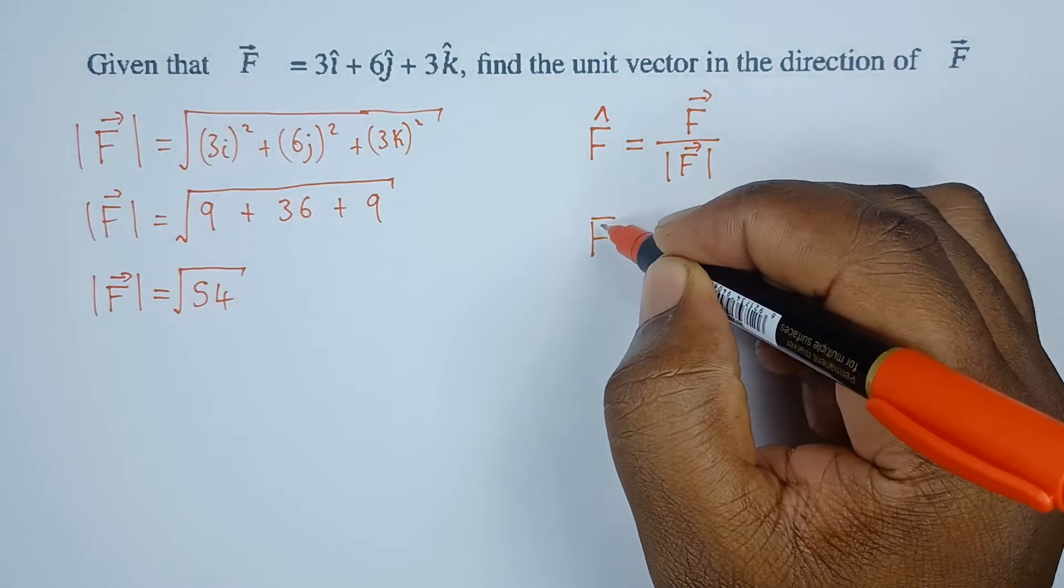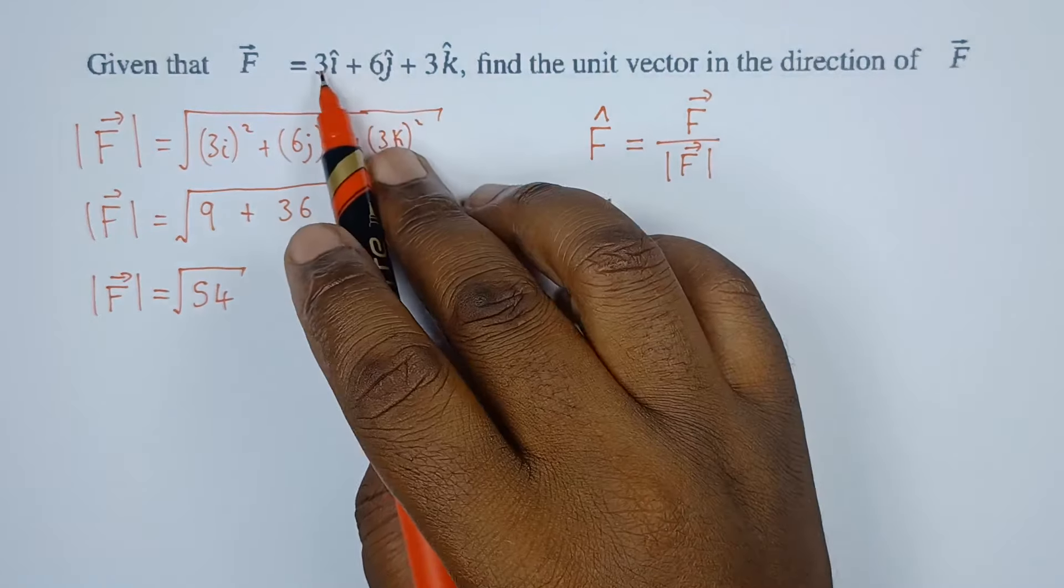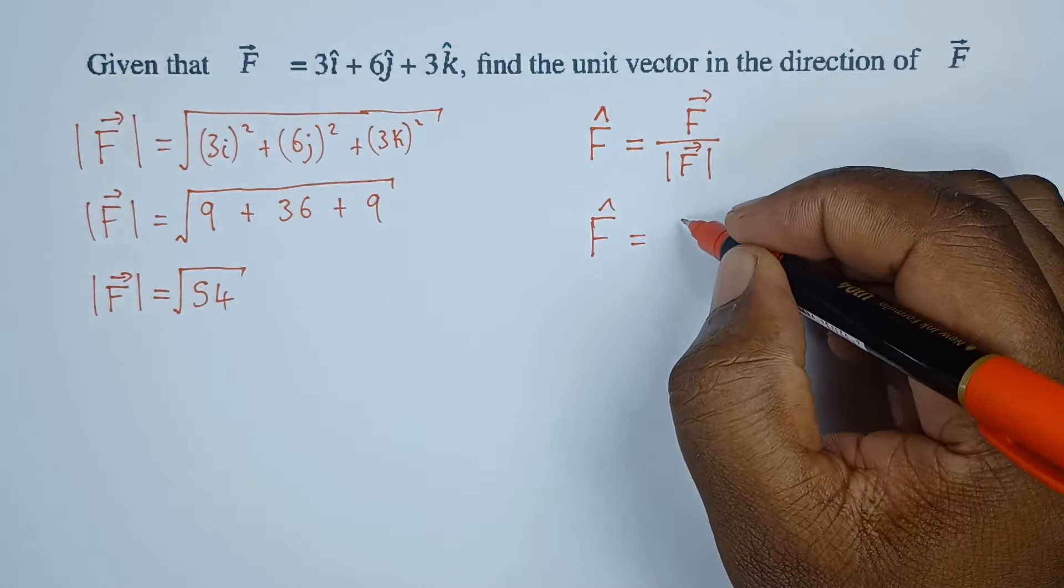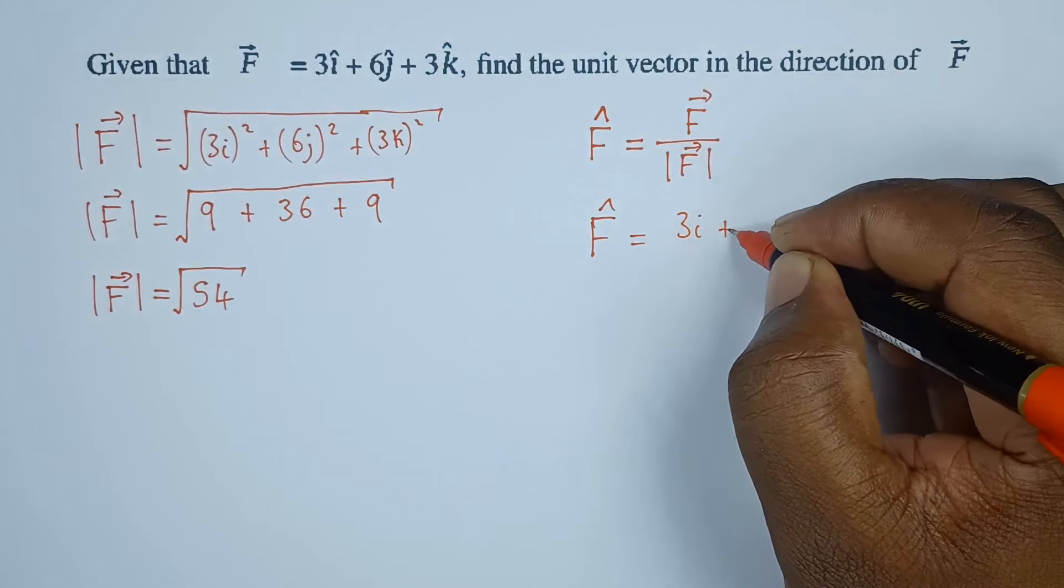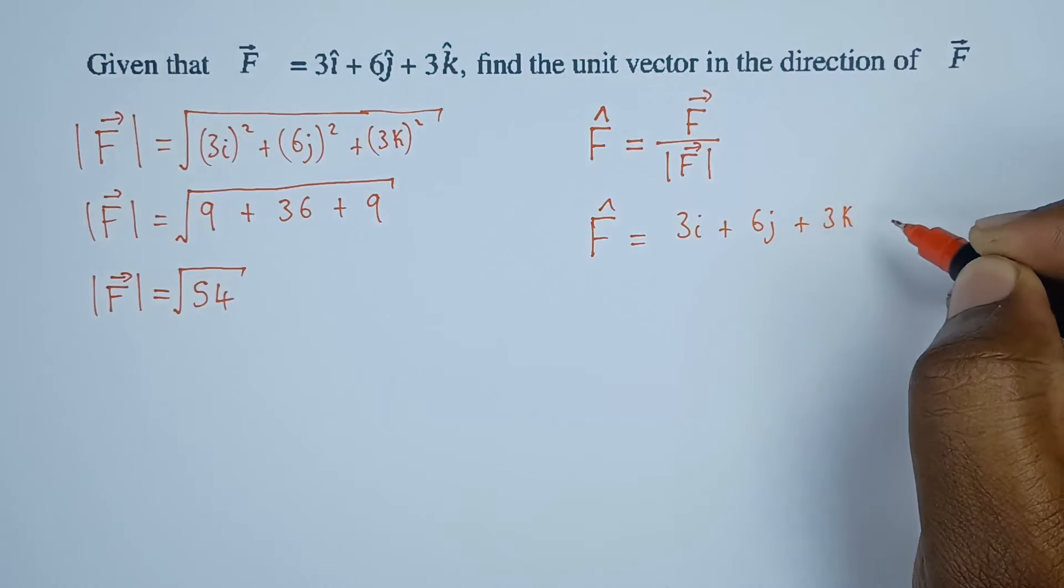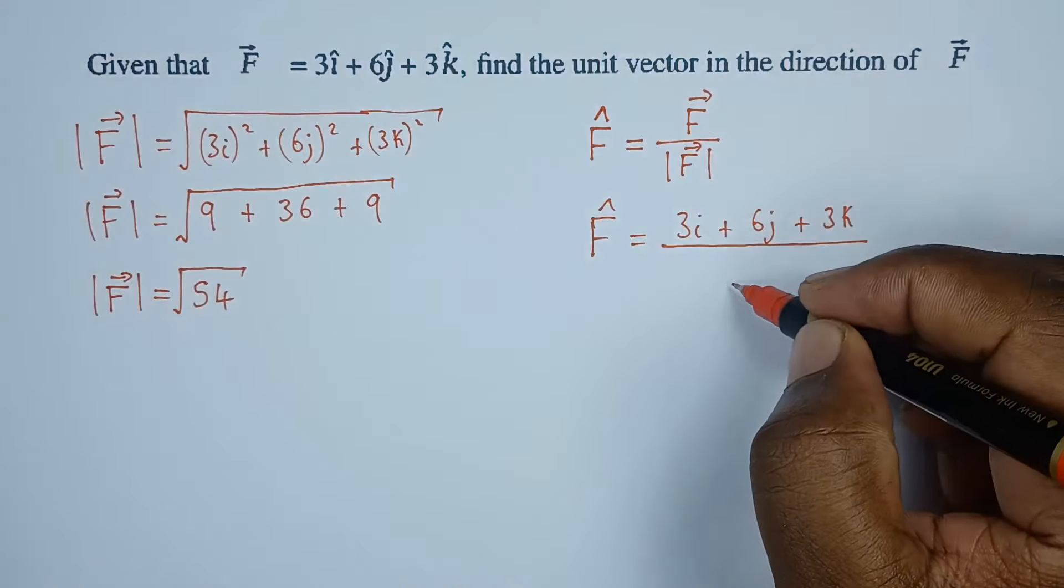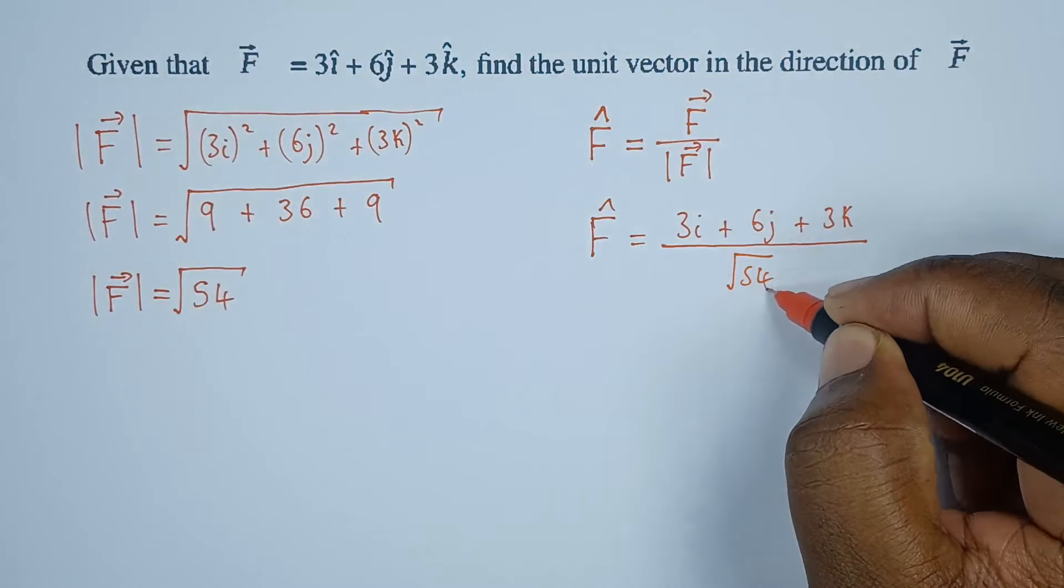Vector F is this vector that we have here, which is 3i plus 6j plus 3k. All this is over the magnitude of F, which we found to be the root of 54.